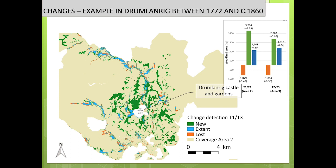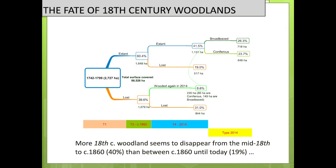We can quantify these changes using GIS. Looking at the 18th century woodlands, between the 18th century and the mid 19th century first OS survey, 60% of the woodlands survived and 40% were lost. Of this 60% that survived, 40% survived to 2014 — 26% are broadleaved and 23% are coniferous. What is also interesting to notice is that there are more woodlands disappearing between the 18th century and early 19th century than between the early and mid-19th century, which is not always what we read in the literature.